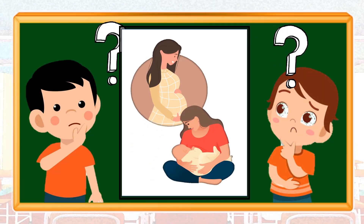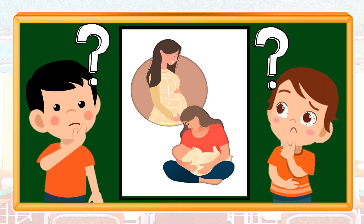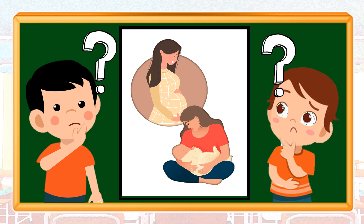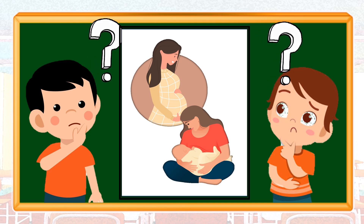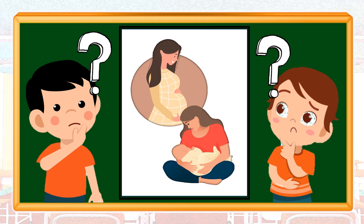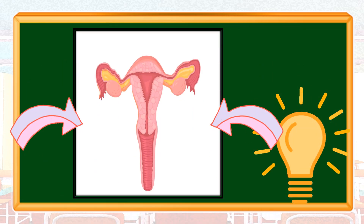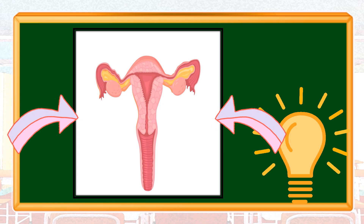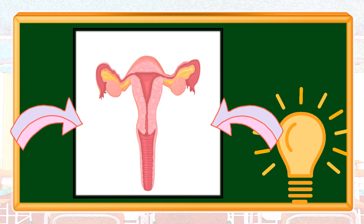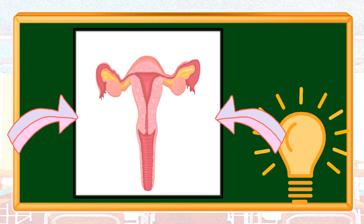The mother carries her child inside her womb for about 9 months. Do you have any idea how does it happen? This organ, the female reproductive organ, is responsible for it. It produces egg cells that, when they undergo fertilization with the help of a sperm cell, can be developed into a baby.